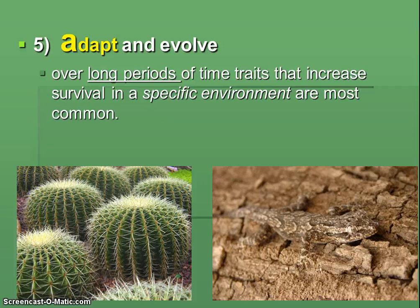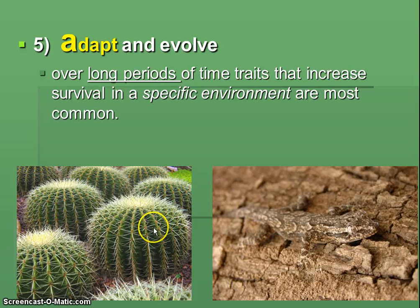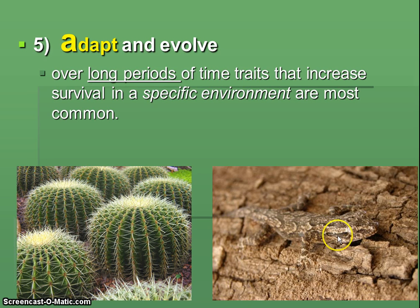Next is A for adapt and evolve. Over long periods of time, traits that increase survival in a specific environment are going to become the most common. A really good example is cacti — what helps cacti survive in the desert? They're able to hold water, and they protect themselves with spines. Another example would be any organism that's camouflaged. Camouflage helps them survive against predators, and the species as a whole will get this trait over time if it helps the species survive better. But it takes a long time and is specific to where the organism lives.